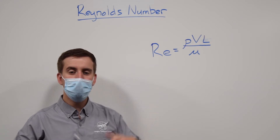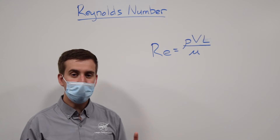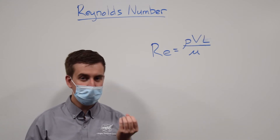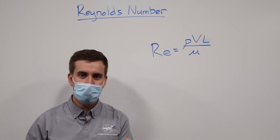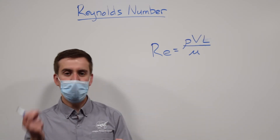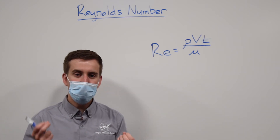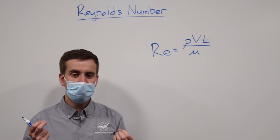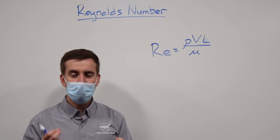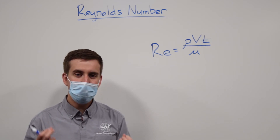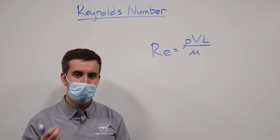This opens up a whole new world: you can have a small airplane, a model airplane even, and a big airplane, and if you put them at the same Reynolds number, then you will get the same behavior out of both of them.